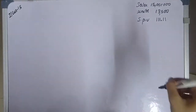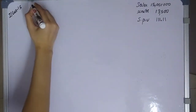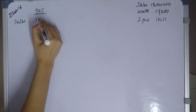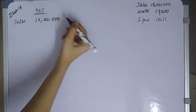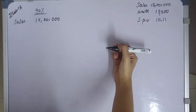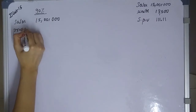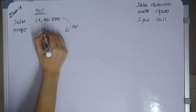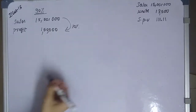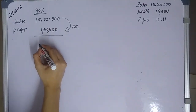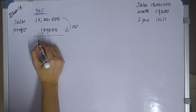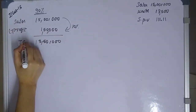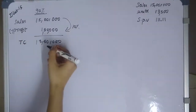First question — working out 90% capacity. Sales: 15 lakhs. Profit margin is 10% on sales. So profit equals 10% of 15 lakhs, which gives us 1,50,000. Therefore, total cost equals sales minus profit: 15,00,000 minus 1,50,000 equals 13,50,000.